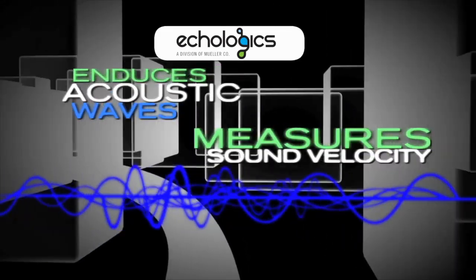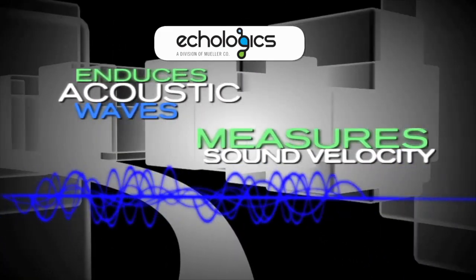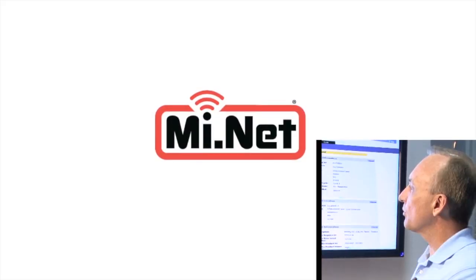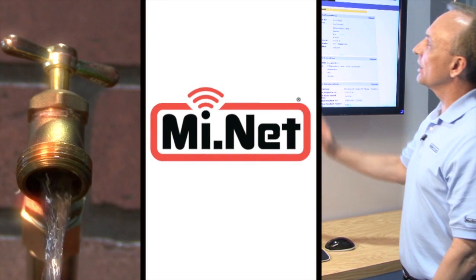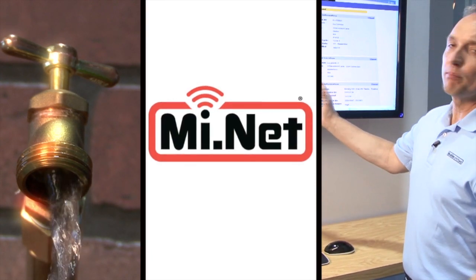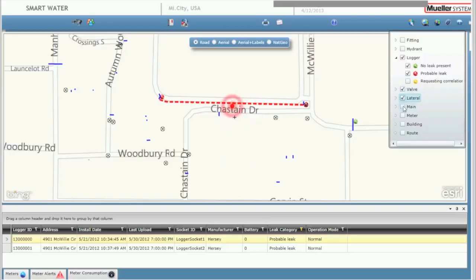Combining components of Ecologics' acoustic-based leak detection technology with Mueller Systems' fixed two-way advanced metering infrastructure network, the MyNet Mueller infrastructure network for utilities, enabling you to remotely identify and locate distribution main leaks from your office before blowouts occur.